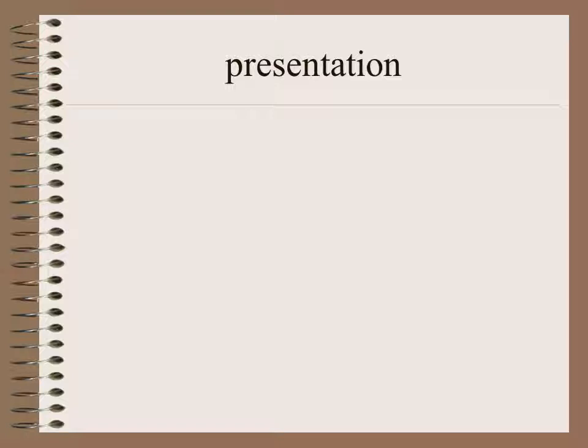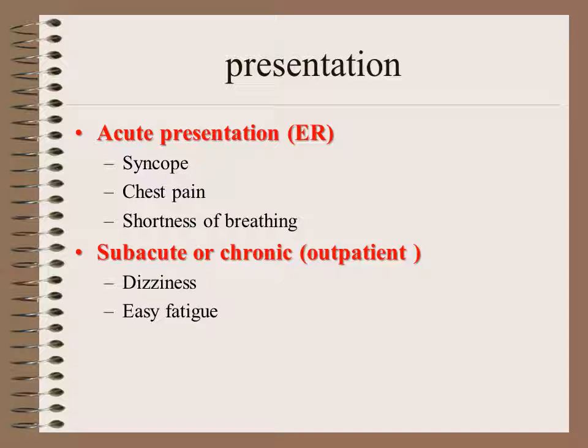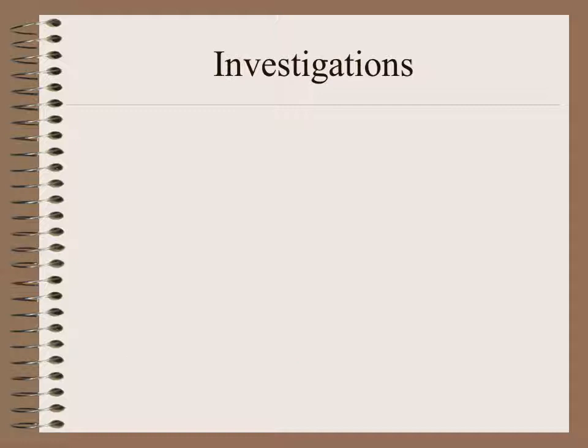Presentation of the patient with bradyarrhythmia and heart block can be very variable. The patient can present acutely to the emergency department with syncope due to cerebral hypoperfusion, chest pain due to coronary hypoperfusion, or shortness of breath due to fluid accumulation in the lungs or muscle hypoperfusion. The patient can also present sub-acutely or chronically with dizziness and easy fatigability, or be completely asymptomatic — discovered during physical examination or ECG, as in cases of congenital complete heart block where patients are very tolerant.